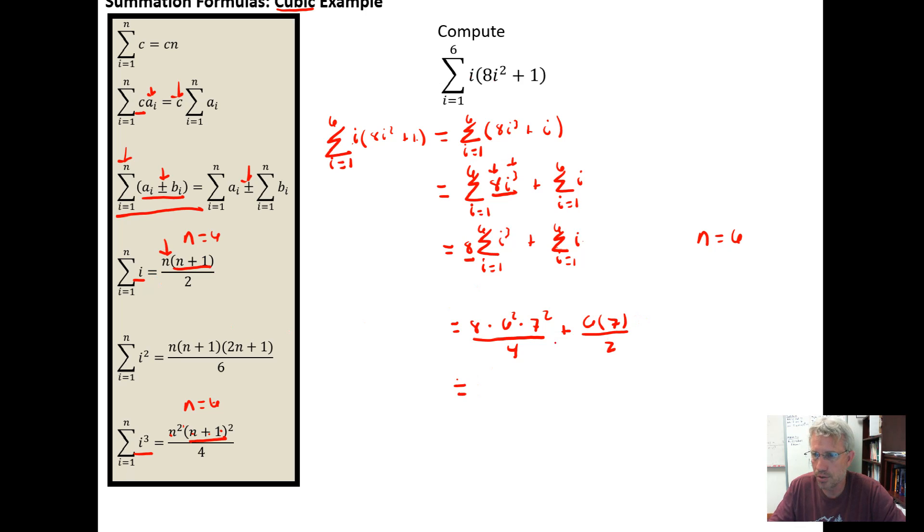I can do some simplifying. I'll get 4 going into 2 twice, so this is going to be 2 times 36 (6²) times 49 (7²) plus 2 goes into 6 three times, and 3 times 7 is 21. Multiplying this out, we're going to get 2 times 49 times 36 plus 21.